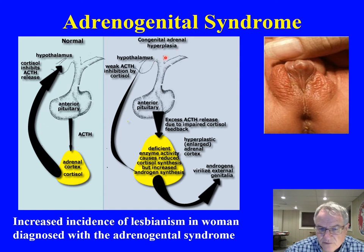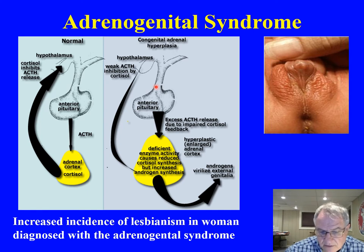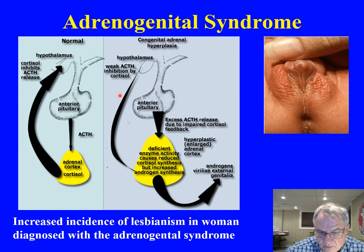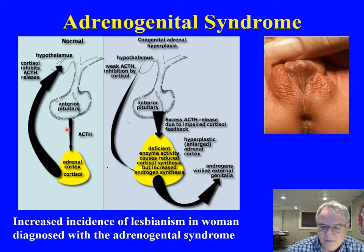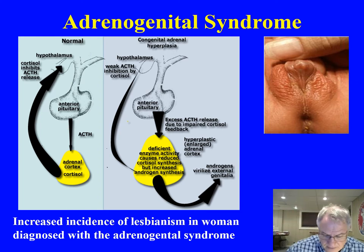The high testosterone gets into circulation and virilizes the external genitalia — the clitoris of a CAH female can appear almost penis-like in appearance. That hormone at these high levels may also be impacting the brain, masculinizing it. What we know about this syndrome is that congenital adrenal hyperplasia females are much more likely to be lesbian compared to normal females — a very exciting and interesting finding.